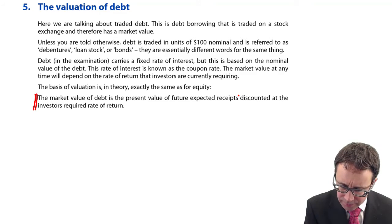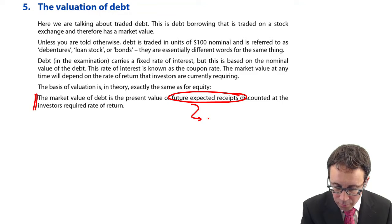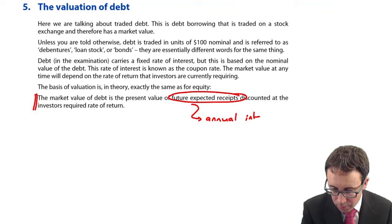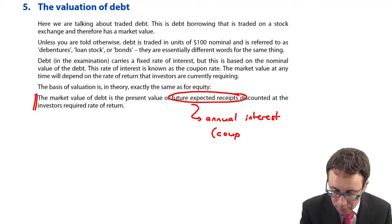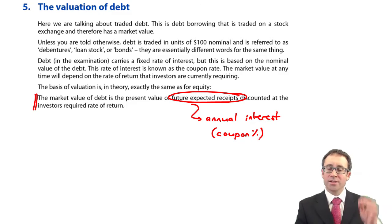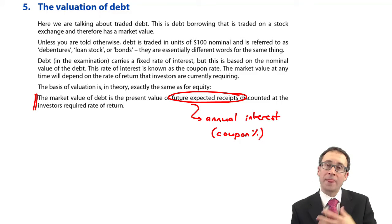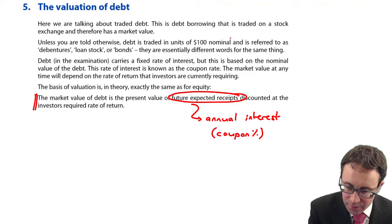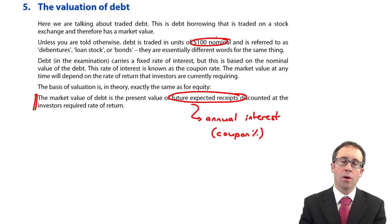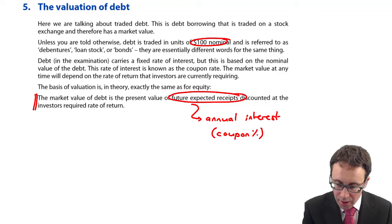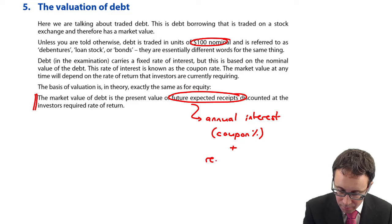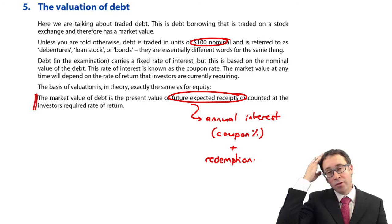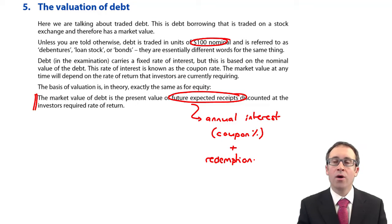Remember, those future expected receipts will be the annual interest. The annual interest on the bond is based upon the coupon rate. To work it out, we apply the coupon rate to the par value. The par value of your debt is $100, your $100 nominal block of debentures or loan stock. Don't forget, if you have some redeemable debt, you also have the redemption cash flow within your future receipts to work out the market value.